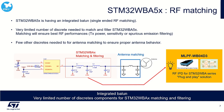Let's now look at RF matching and filtering requirements. STM32WBA has an integrated balun, so you will find a single-ended RF output pin. A very limited number of discrete components are needed to ensure the matching and filtering function. This matching and filtering function will allow you to get the best TX power performance, the best sensitivity, and ensure good harmonic rejection.